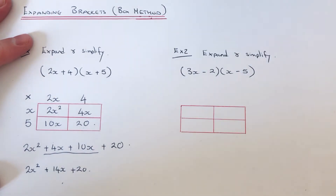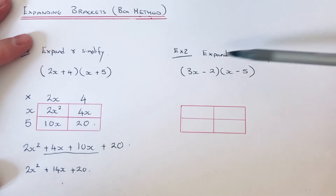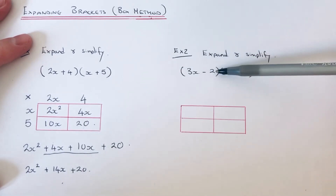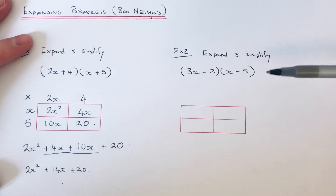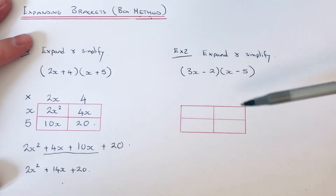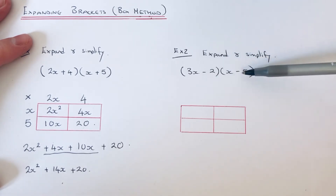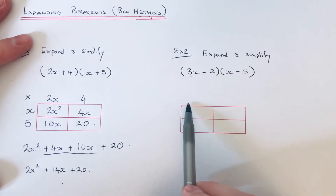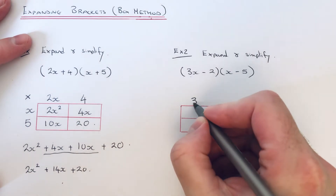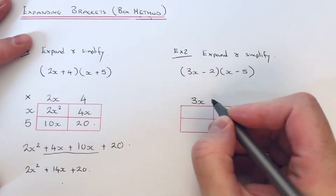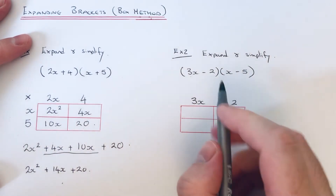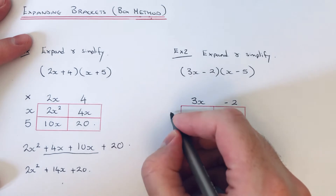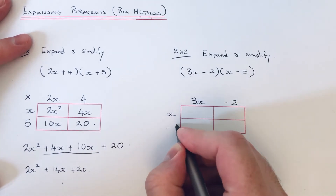Let's move on to the second example: expand and simplify (3x − 2)(x − 5). This one's a little bit harder because it contains negative numbers. Split the first bracket across the top — 3x and −2 — and put the two terms of the second bracket down the side.